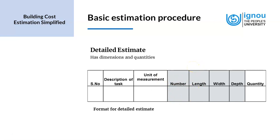The number column represents the number of times that activity is done. If you are doing one trench or two, we have to mention the number here. We also have three columns corresponding to length, width and depth, and then a column for quantity. We find the quantity by multiplying the length, width and depth. For example, for the size of a trench, the length, breadth and height of the trench to be excavated are entered into the detailed estimate.